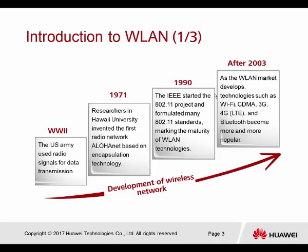WLAN actually started at World War II when the US Army used radio signals for data transmission. At the year 1971, researchers at Harvard University invented the first radio network, called the ALOHAnet, which was based on encryption technology. In the 1990s, the IEEE started the 802.11 project and formulated many standards for WLAN, using different standards to control different modulation methods to speed up wireless speed.